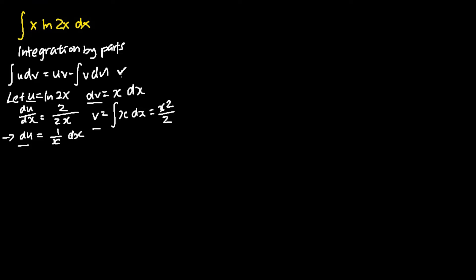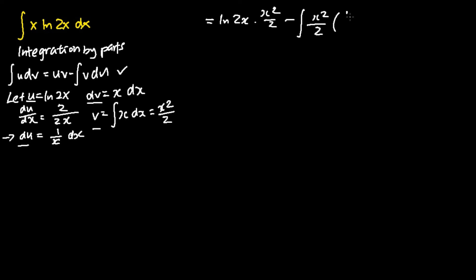I can apply the integration by parts formula to move on to the next step. I will get u, which is ln 2x, times v, which is x squared over 2, minus away the integral of v, x squared over 2, times du, which is 1 over x dx. This can be further simplified into x squared over 2 times ln 2x, subtracting away the integral of x over 2 dx.